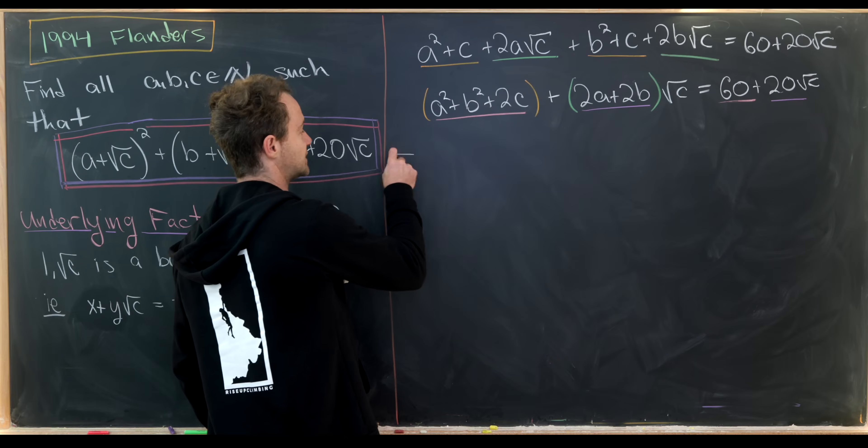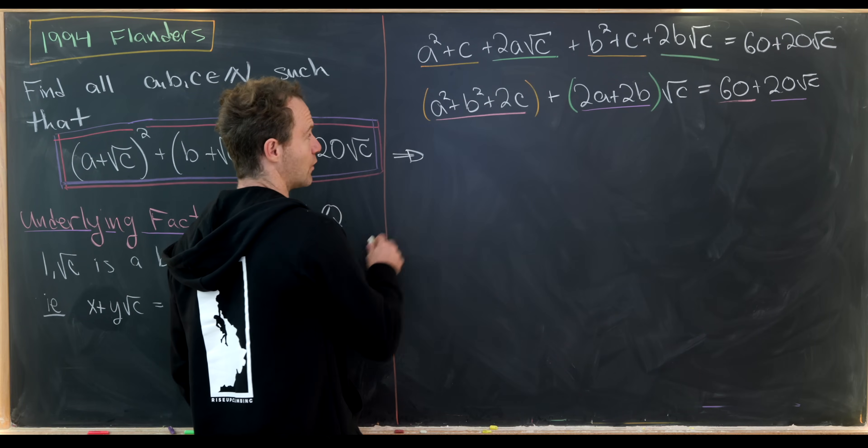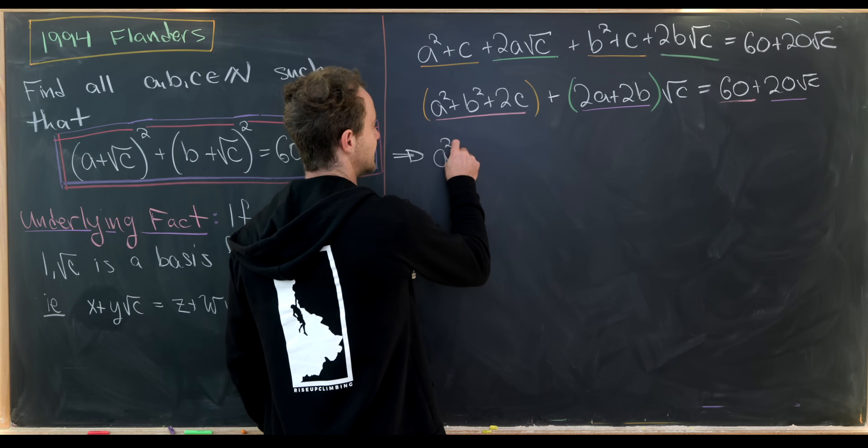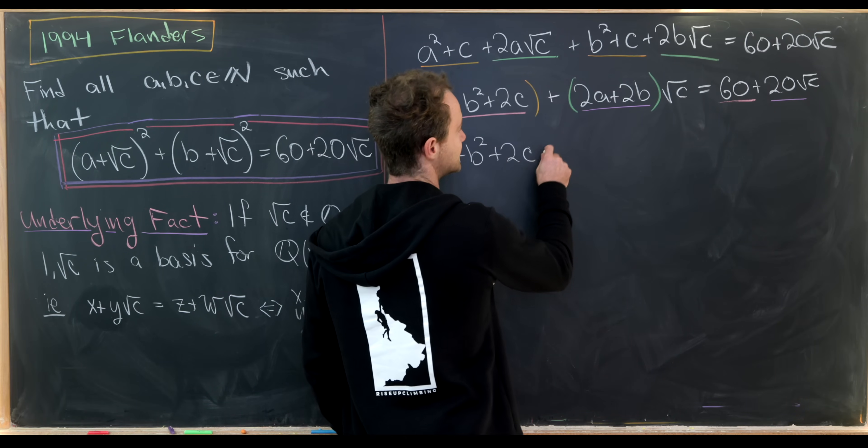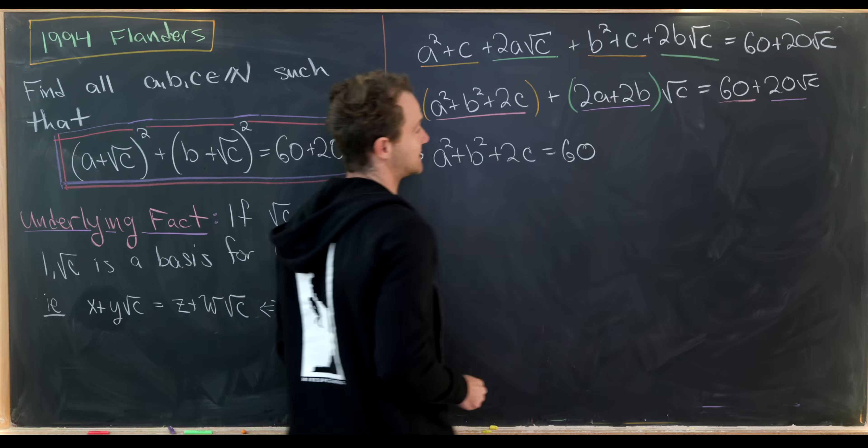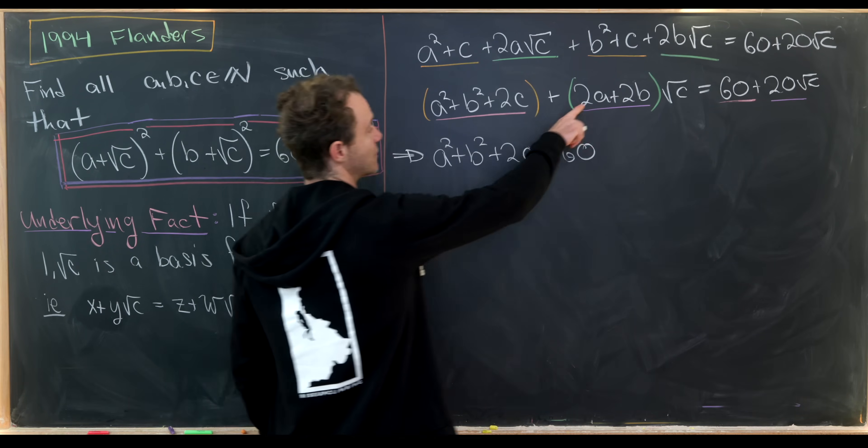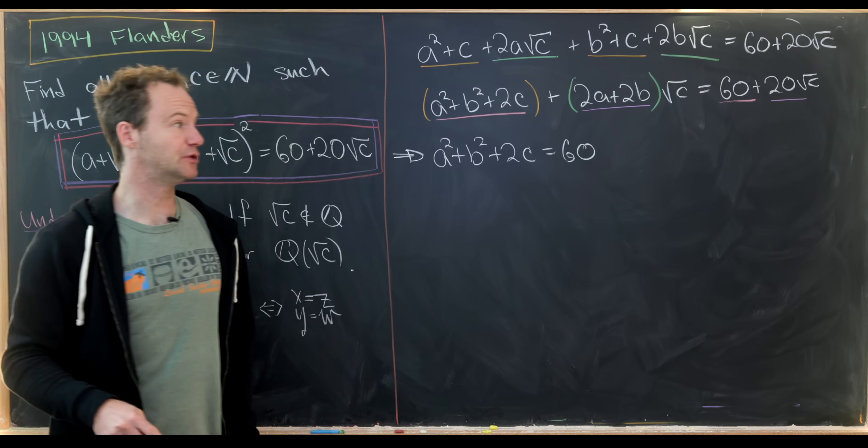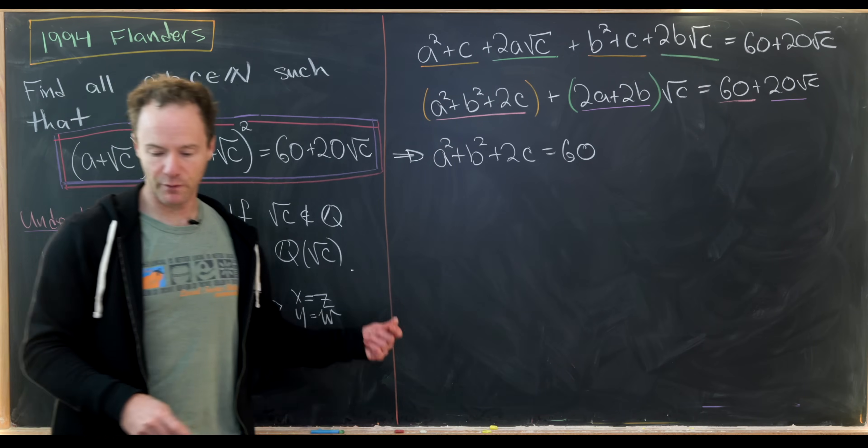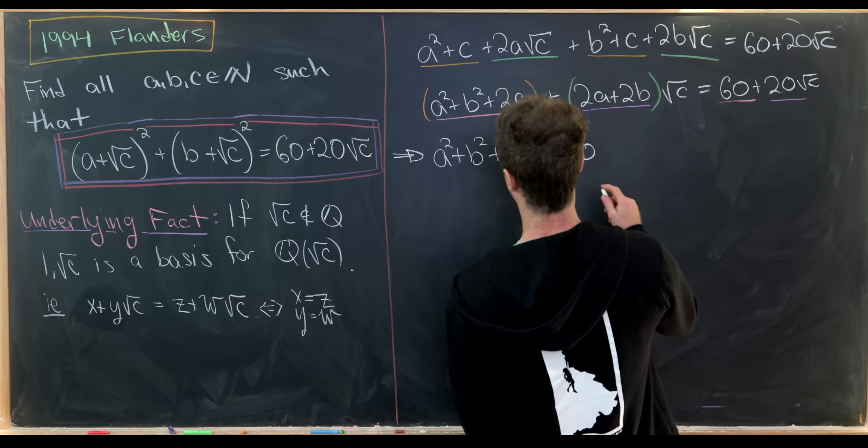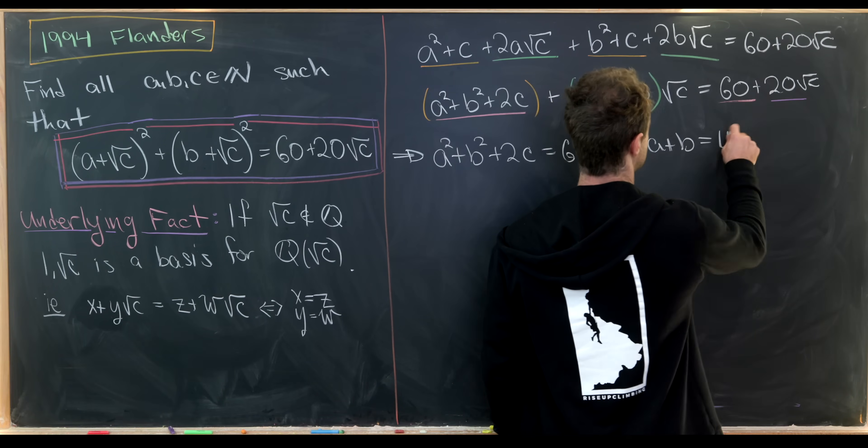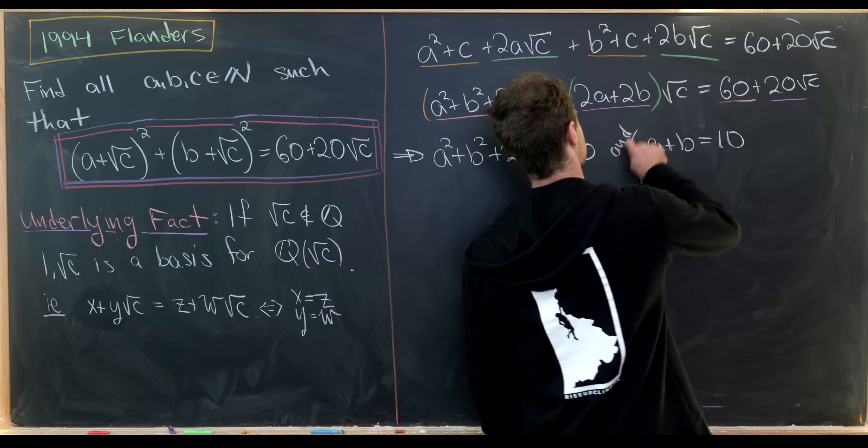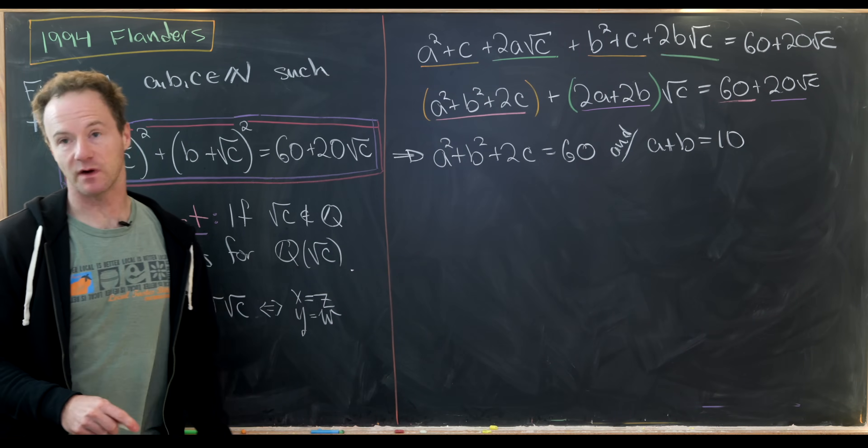Okay, so just to have a midpoint summary, we know that a squared plus b squared plus 2 times c must be equal to 60. And we also know that 2a plus 2b equals 20. But we might as well divide by 2 and that'll give us a plus b equals 10. So that'll be our nice system of equations.